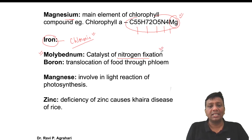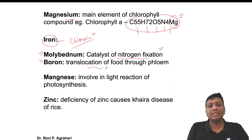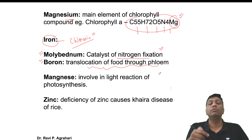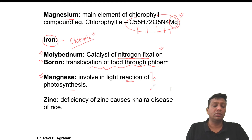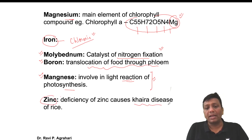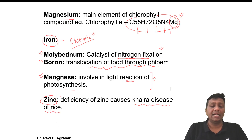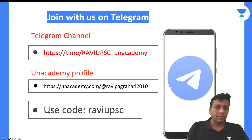Molybdenum works as a catalyst for nitrogen fixation. Boron is involved in the translocation of food through the phloem - as the root absorbs food, phloem distributes it everywhere, and boron facilitates this. Manganese is involved in the light reaction of photosynthesis - in the absence of manganese, there is no photosynthesis in the plant body. Zinc deficiency causes a disease called khaira disease in rice plants.